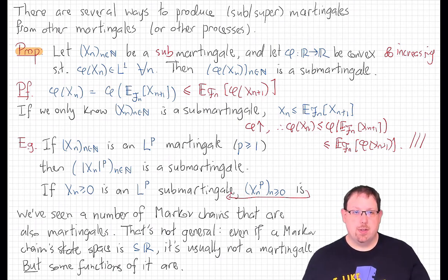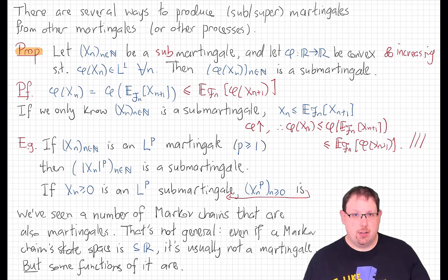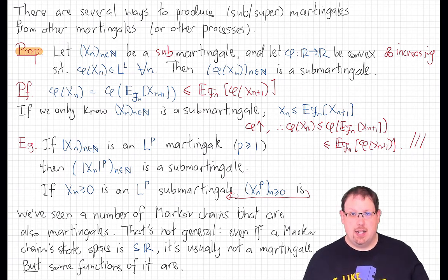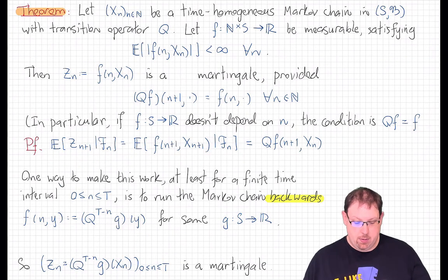Now what if we want a function of a process to actually be a martingale, not just a sub-martingale? That's more subtle. One nice rich source of such examples is to start not necessarily with a martingale but with a Markov chain. We've seen one example of a Markov chain that is also a martingale: the symmetric random walk on the integer lattice. But most of the time, even if a Markov chain is on a real state space, there's no reason to think it will also be a martingale — the two classes are different kinds of stochastic processes. However, there is a nice way to produce from any Markov chain a martingale by taking certain functions of that Markov chain.